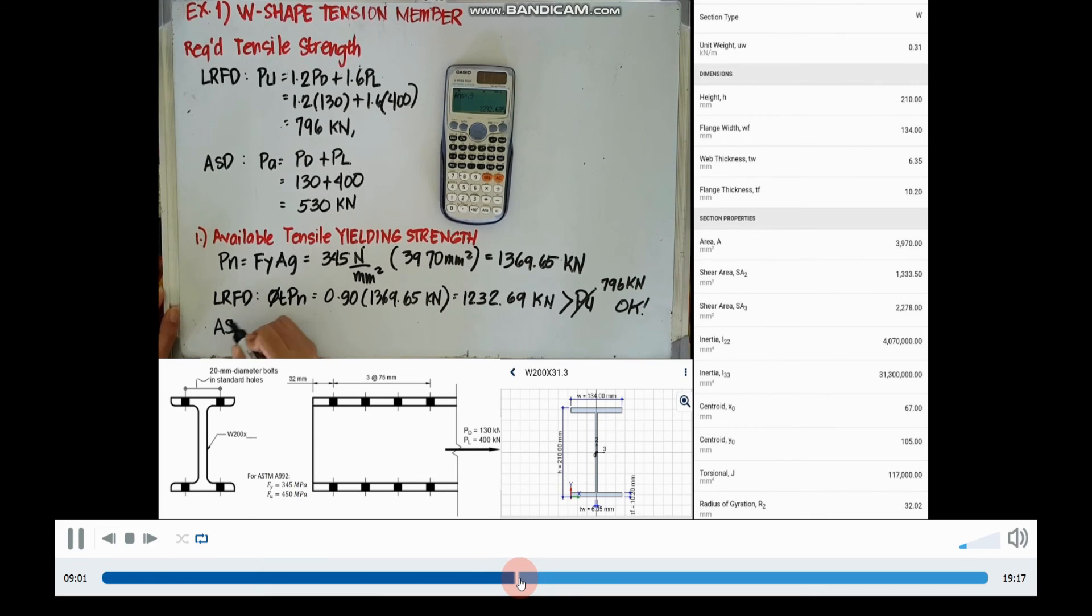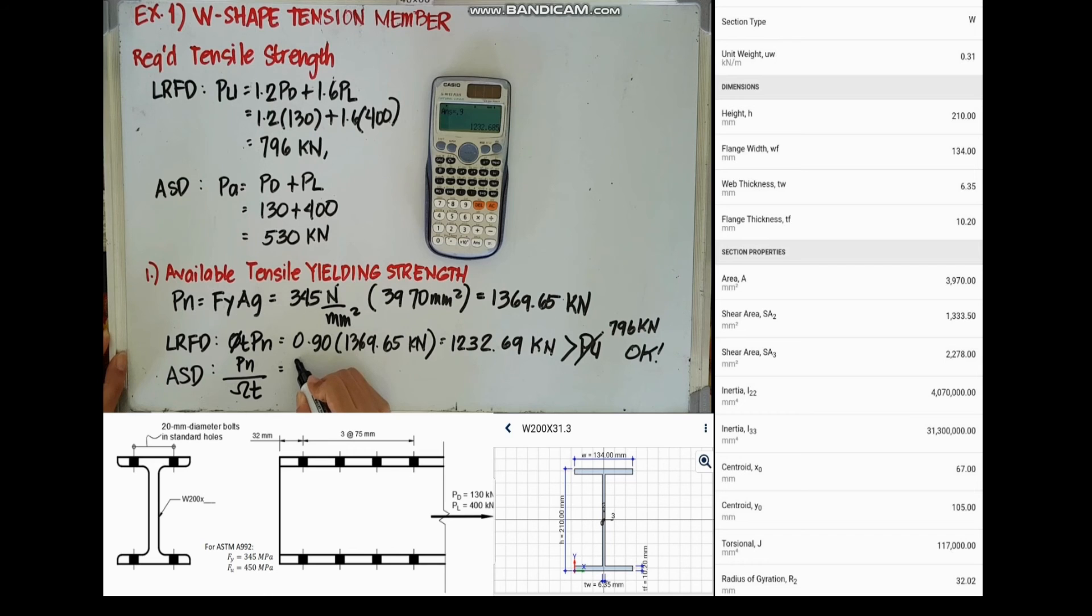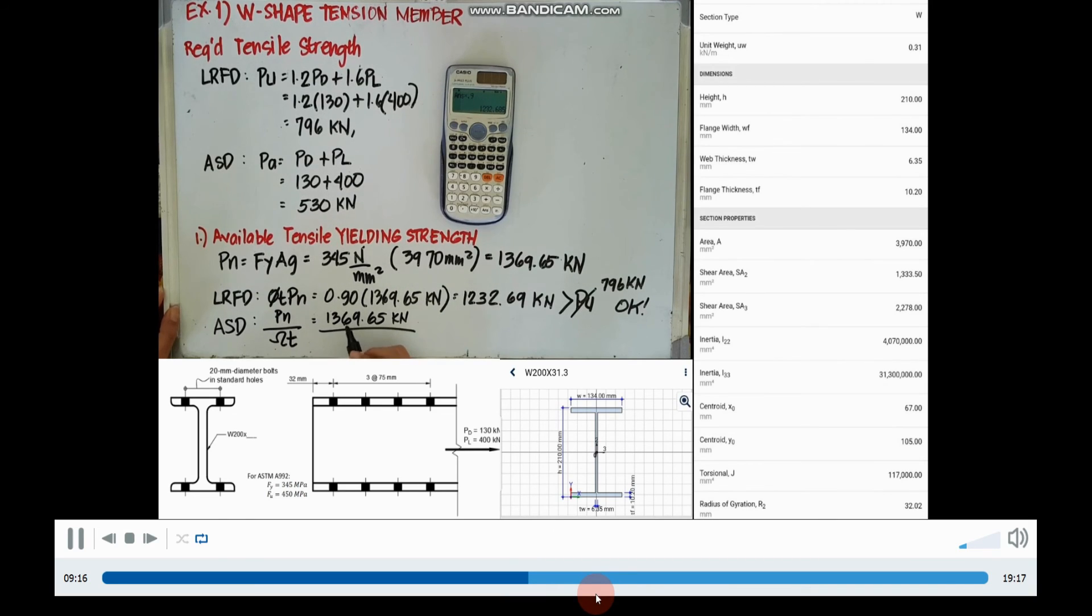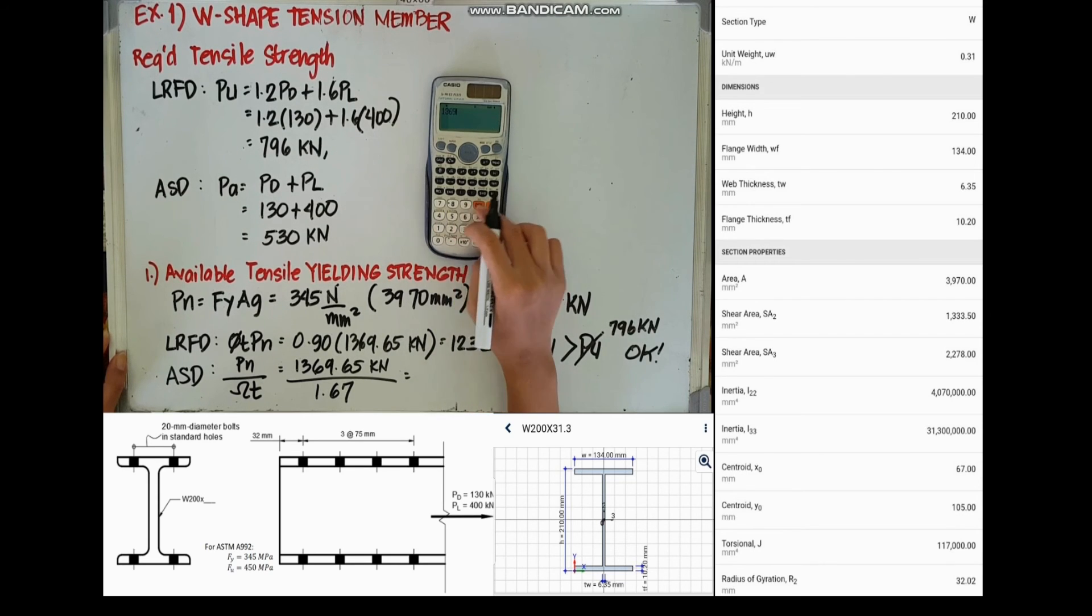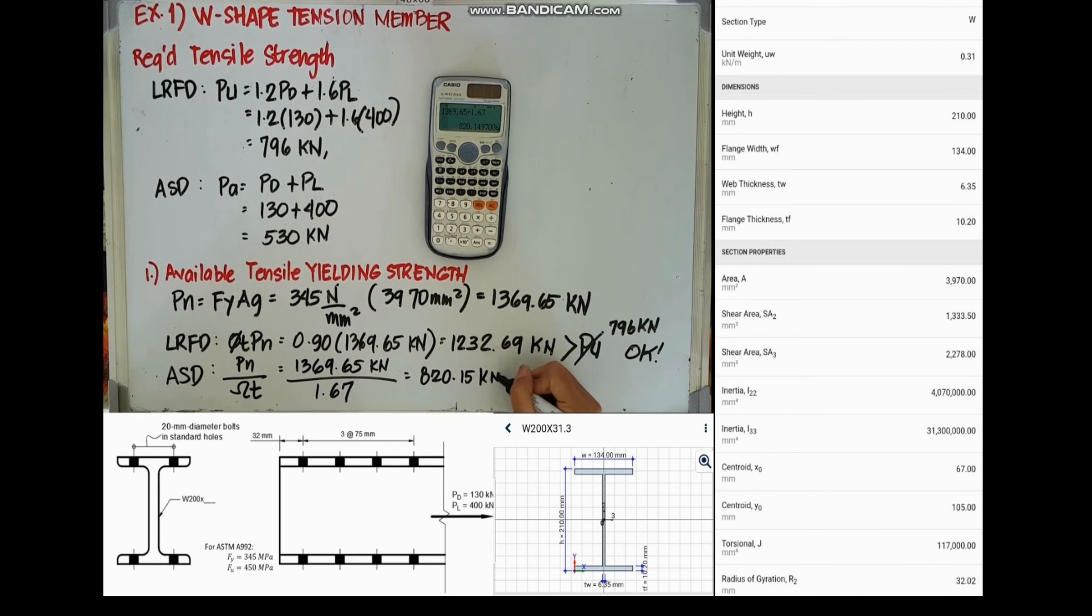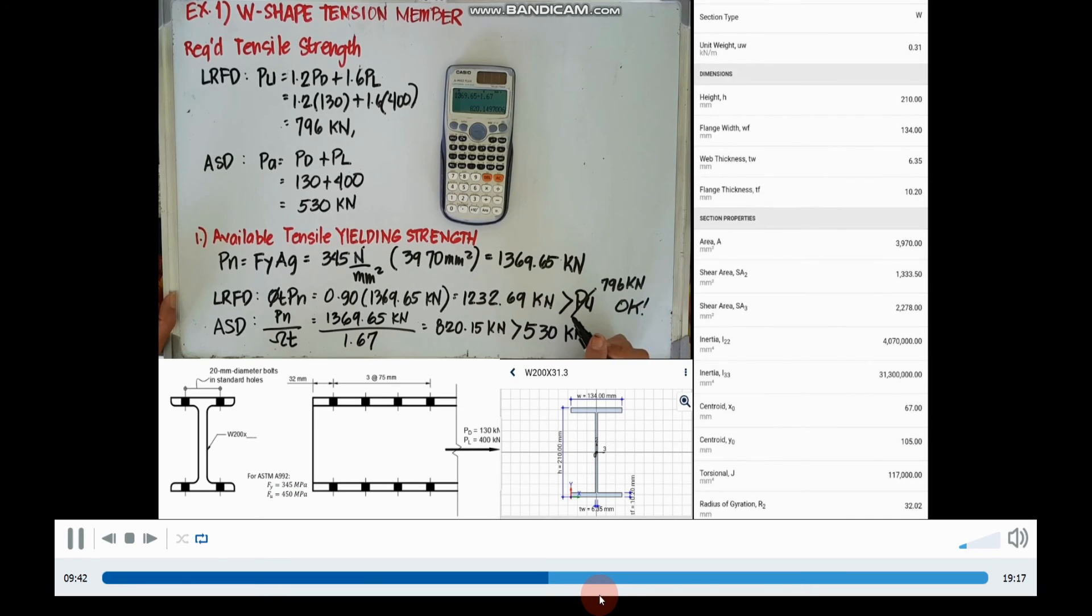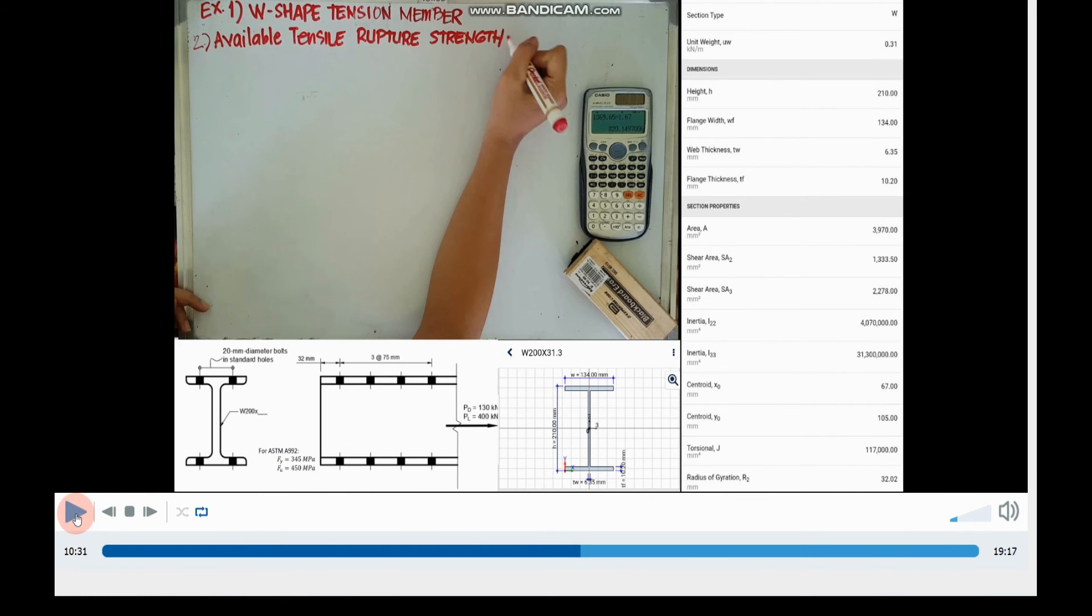And for ASD, we will divide our nominal strength by the omega T, and it will be equal to 820.15 kN. Comparing it to the required tensile strength under ASD, it is much greater, so it's okay.